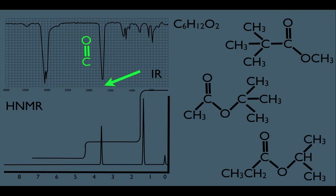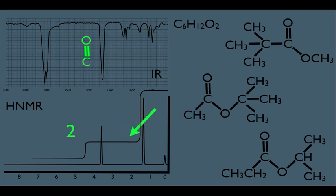Let's turn our attention to the HNMR. Notice we can see there are two signals, one here and one here, meaning two types of hydrogens in our molecule. Look at this bottom molecule — if we call these the A-type hydrogens, these the B-type, this a C-type, and these the D-type, that would be four types of hydrogens. This cannot be our molecule.